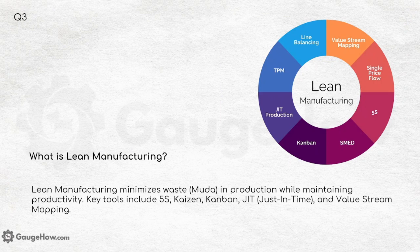What is lean manufacturing? Lean manufacturing minimizes waste — Muda — in production while maintaining productivity. Key tools include 5S, Kaizen, Kanban, JIT (just in time) and value stream mapping.